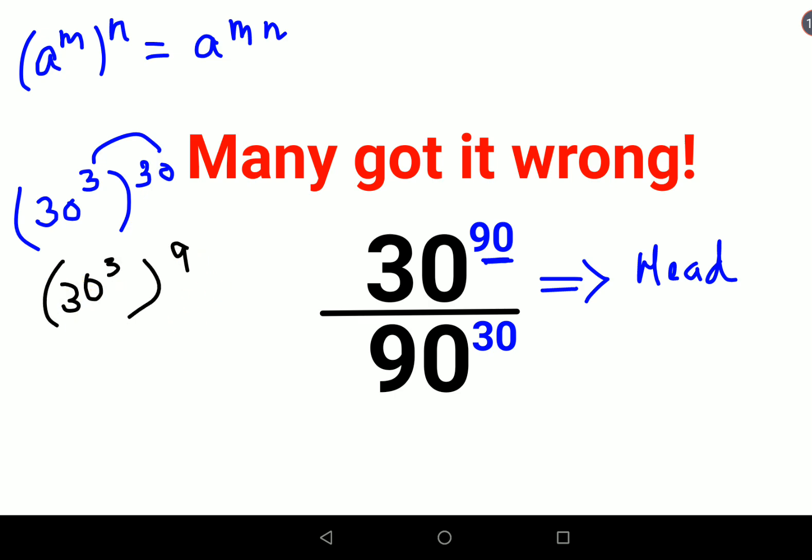Now you will understand why I split the index on the numerator. The reason is a upon b raised to the same index - a raised to n, b raised to n - you can write this as a upon b the whole raised to n.